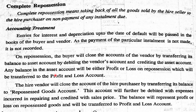Any balance in the asset account will represent either profit or loss on repossession, which will be transferred to the Profit and Loss Account. The asset account balance is closed by transferring to the Repossessed Goods Account. After the repossession, the Repossessed Goods Account is opened.